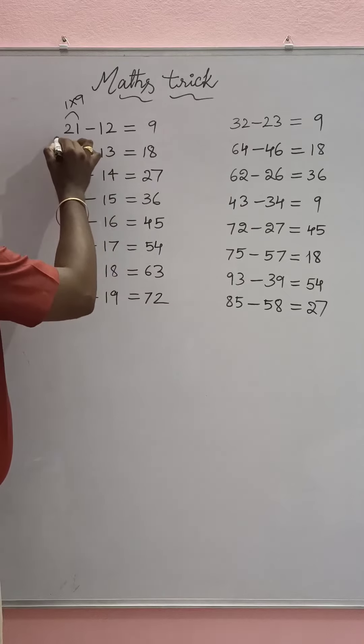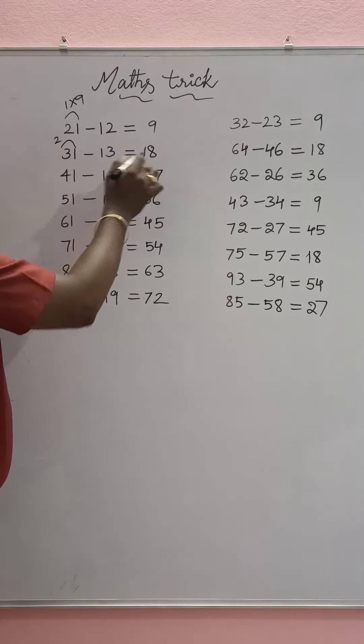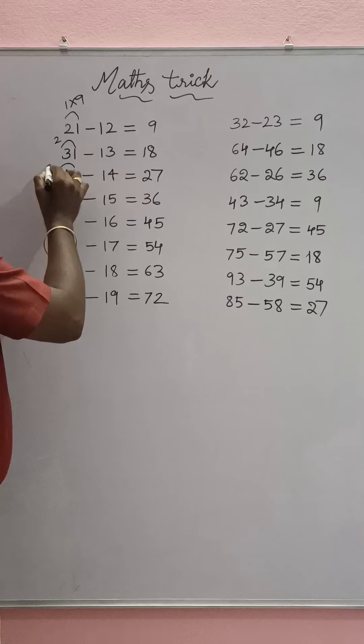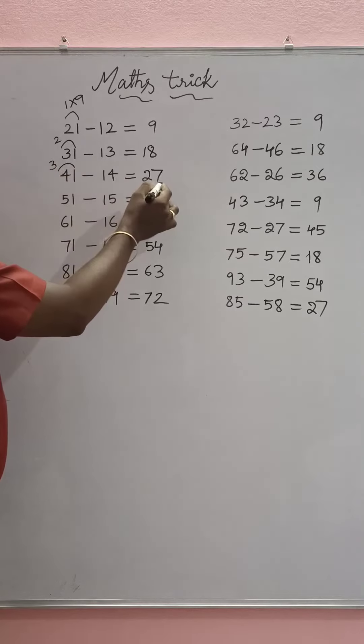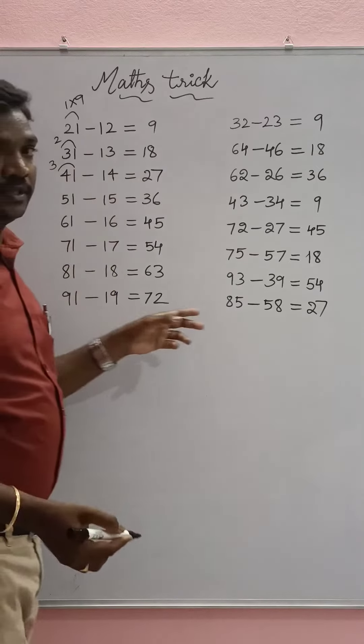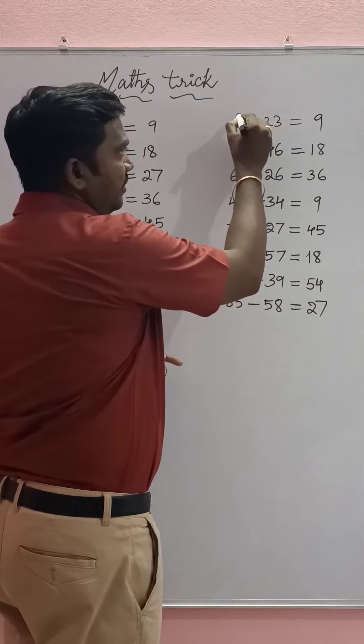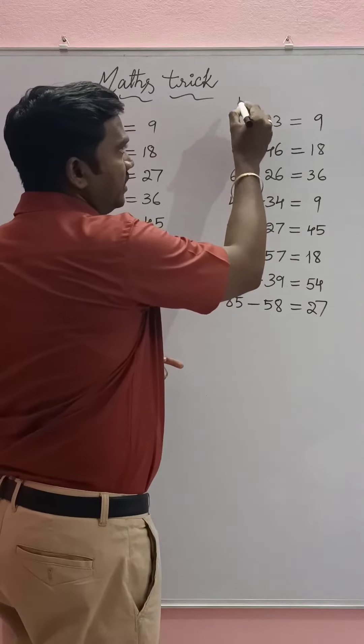...1 is 2, 2 times 9 is 18. 4 minus 1 is 3, 3 times 9 equals 27, like this. Here also the difference between 3 and 2 is 1, 1 times 9.